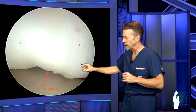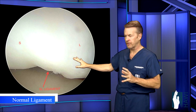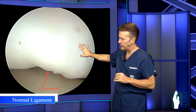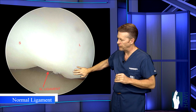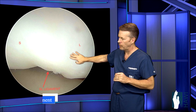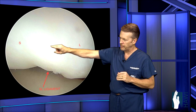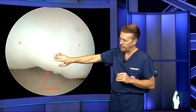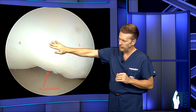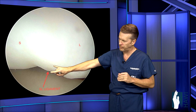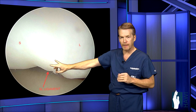Let's look at an actual normal scapholunate ligament. This is the lunate here. This bone is covered by normal cartilage, and then over on the scaphoid the same. And then there's this fluffy ligament where the arrow is pointing, called the scapholunate ligament, that can be disrupted.